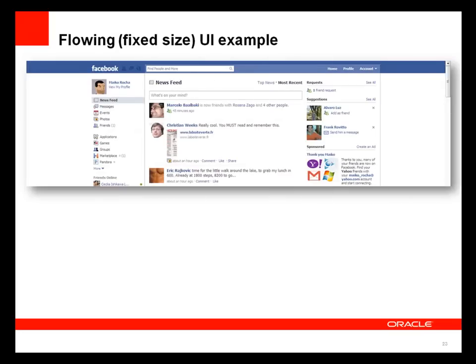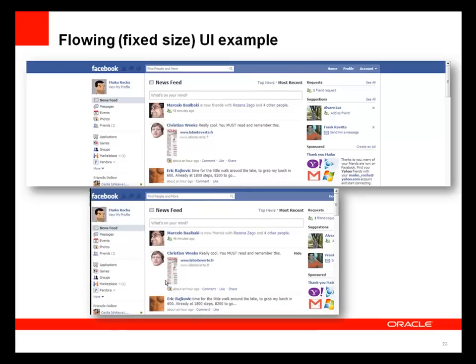Looking at Facebook as a flowing example — even if the browser is maximized, there are blank areas to the left and right of the page. If you condense the horizontal space, you still don't get a scroll bar because it's a fixed size. You need a minimum resolution to view Facebook in this configuration.